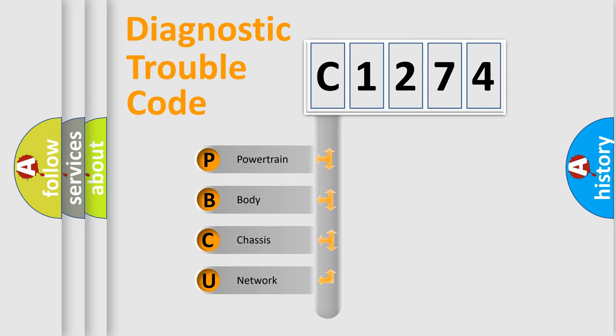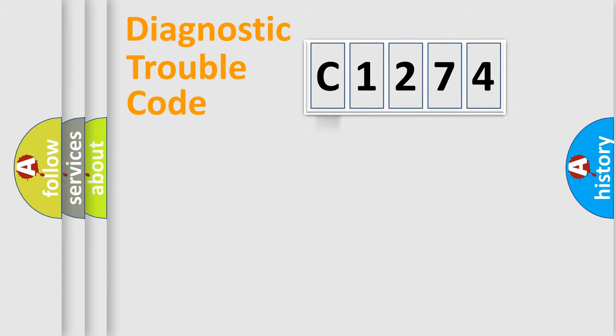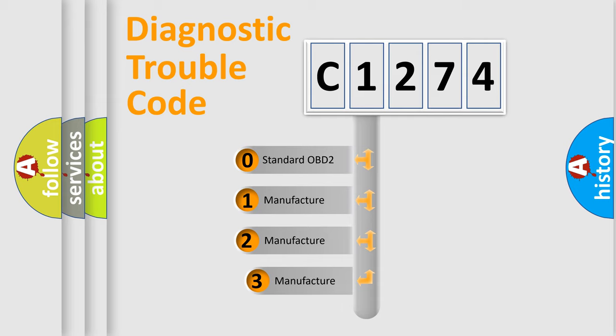We divide the electric system of automobile into four basic units: Powertrain, Body, Chassis, and Network. This distribution is defined in the first character code.